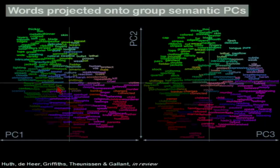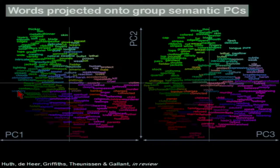Looking at the first two PCs, we have the 985 common words projected into this space. The first principal component distinguishes between words like victim, innocent, murder, convicted, child, mother, confessed on one end — and words like atmosphere, clouds, stream, landscape, scenery on the other. This is the axis most distinguished in brain activity when subjects are listening to these stories. The principal components generally make sense; the space is organized in a meaningful way.